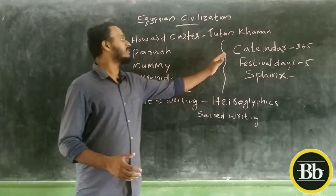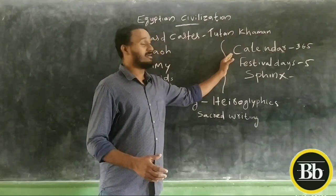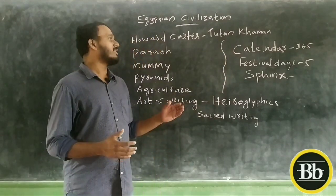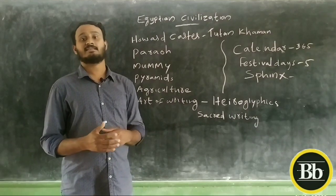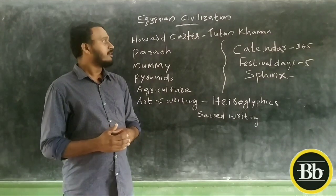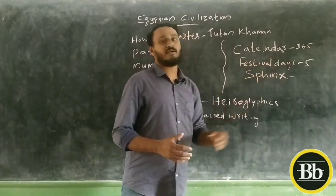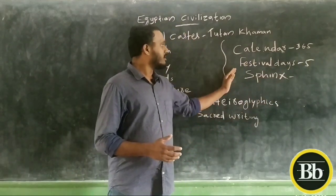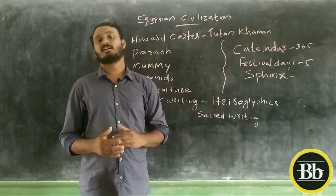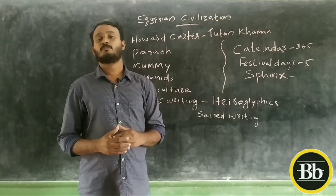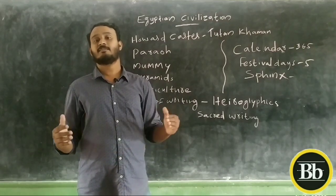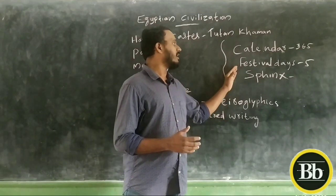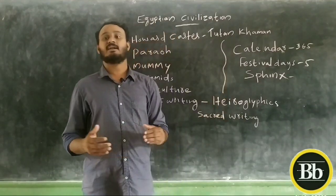The first thing is the calendar. In the Egyptian civilization, there is a calendar system. There are 365 days — 30 days in each month and 5 additional days.